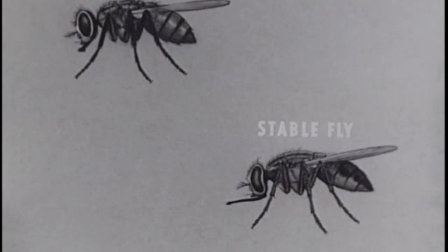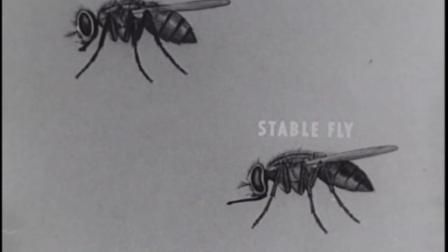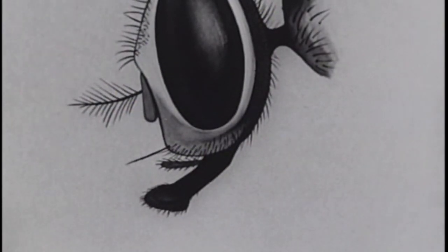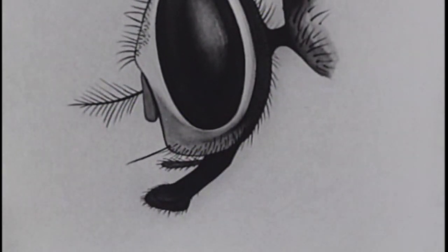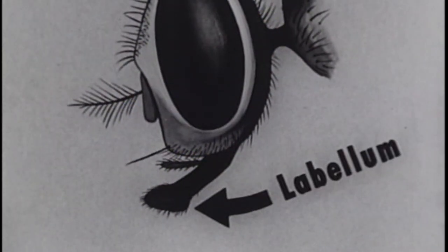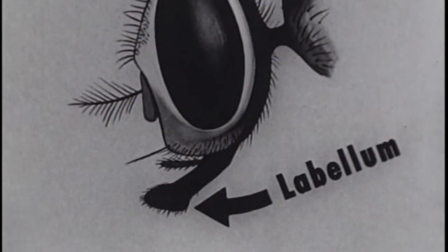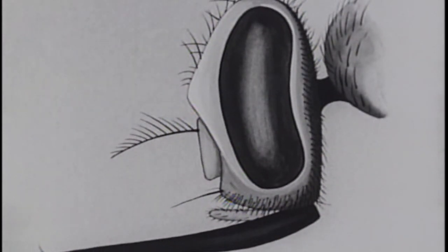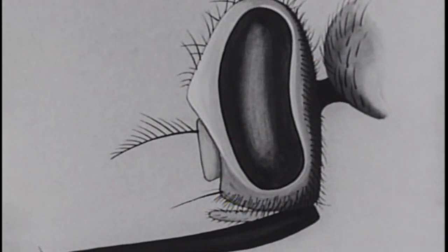Similar in appearance to the housefly is the stable fly. The chief difference is in the mouthparts. The housefly's mouthparts extend downward and end in a spongy pad called the labellum. Unlike the housefly, the stable fly is a blood feeder, and its mouthparts project straight forward like a bayonet.